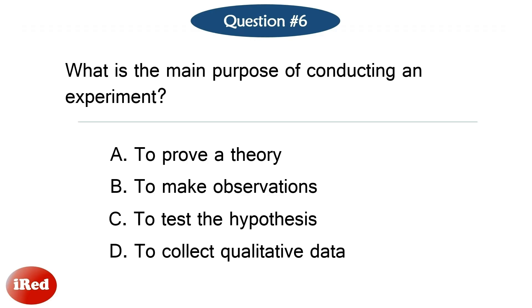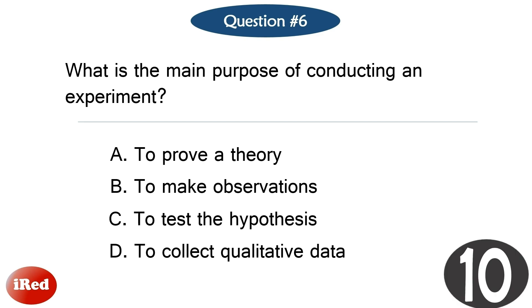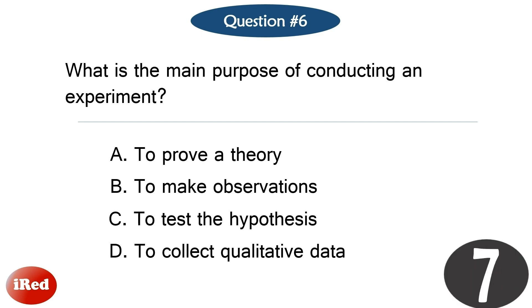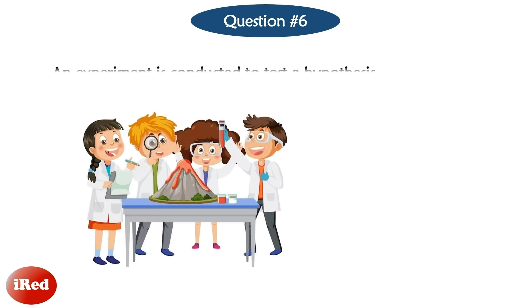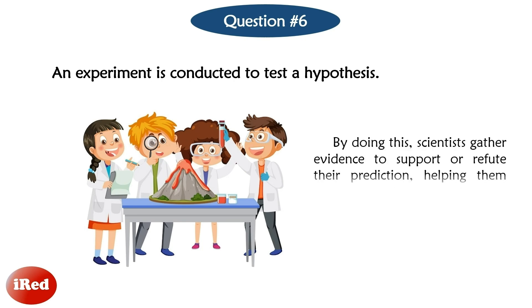What is the main purpose of conducting an experiment? The correct answer is letter C. An experiment is conducted to test a hypothesis. By doing this, scientists gather evidence to support or refute their prediction, helping them understand if their idea is correct.